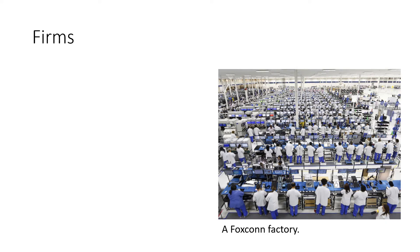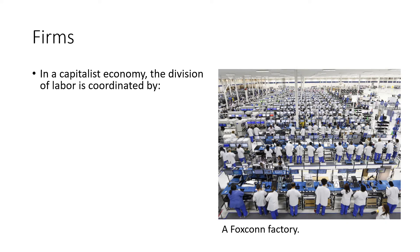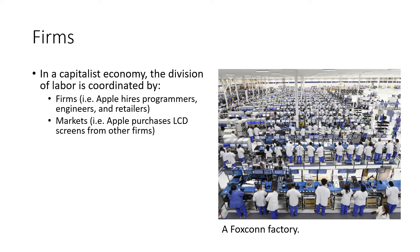Now let's think about firms a little more generally. In the capitalist economy, the division of labor is coordinated by a couple of things. First, firms decide what type of product they're going to produce and hire accordingly — in the case of Apple, they're hiring programmers, engineers, and so forth. It's also coordinated by markets, which respond to price signals. Firms will utilize their comparative advantage to decide what to produce and what to utilize from other producers in the production process.